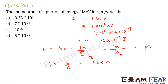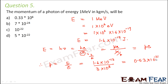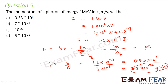Therefore p equals E divided by c, which is 1.6 into 10 to the power minus 13 divided by 3 into 10 to the power 8, giving 5.3 into 10 to the power minus 22 kg meter per second. The correct option is D.